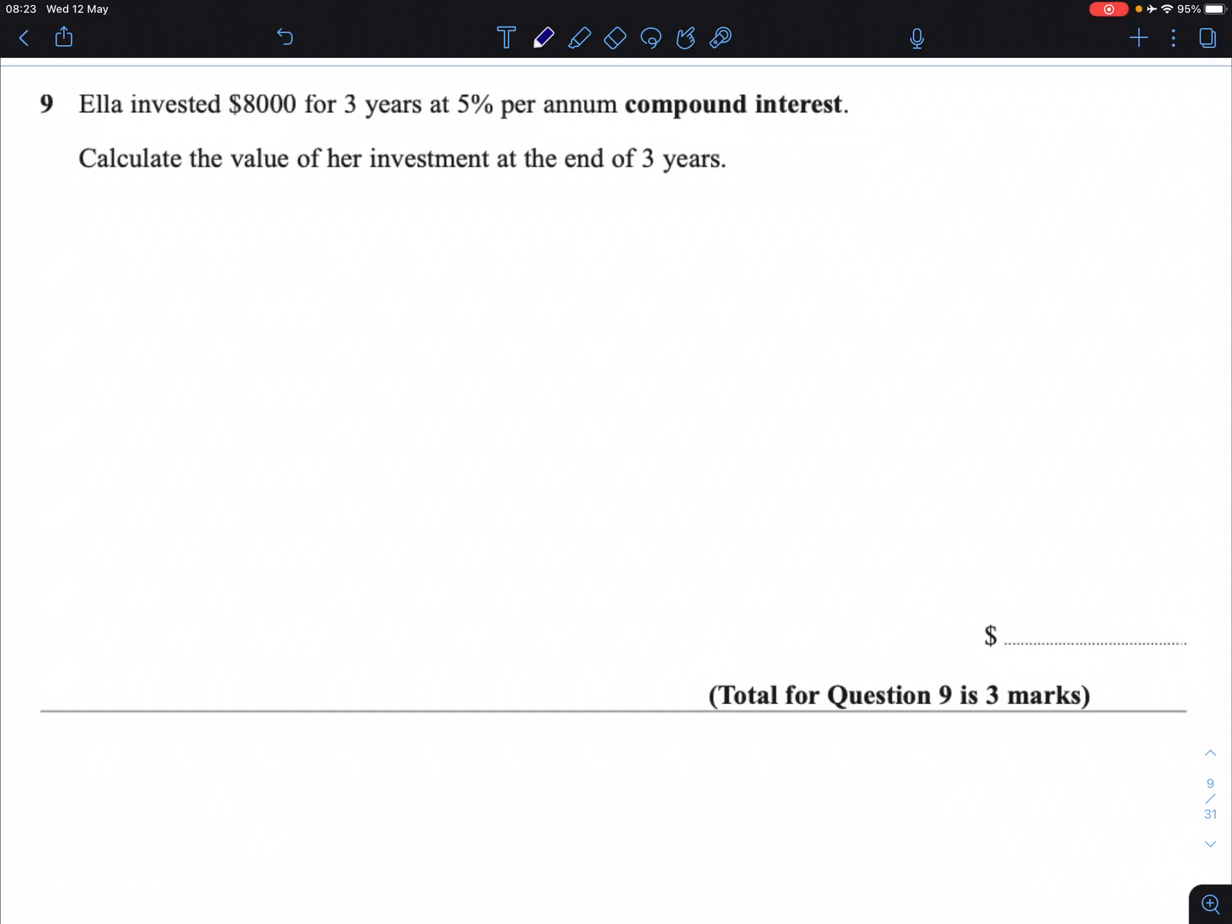Question 9. Ella invested $8,000 for 3 years at 5% per annum compound interest. Calculate the value of your investment after 3 years.